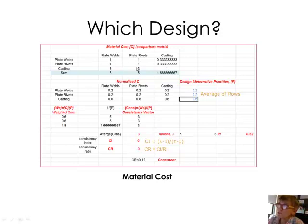So, again, I'll have ones on the diagonal, and I'm going to compare the plate weld design to the plate riveted design, and they're equal. So that's what the one is telling me. There's no difference between them. In terms of casting, the casting is going to be moderately more favorable to us with respect to material costs.